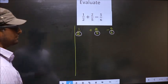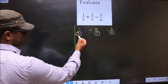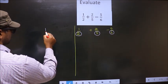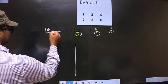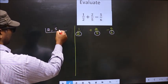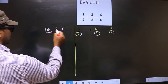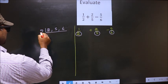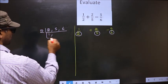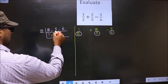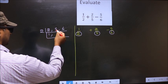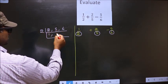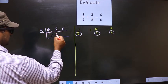So the LCM of 2, 5, and 6. The first number is 2. 2 is a prime number, so 2 goes into 2 once. The other number 5 is not divisible by 2, so we write it down as it is.